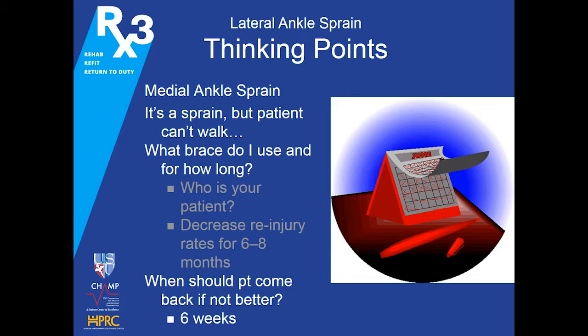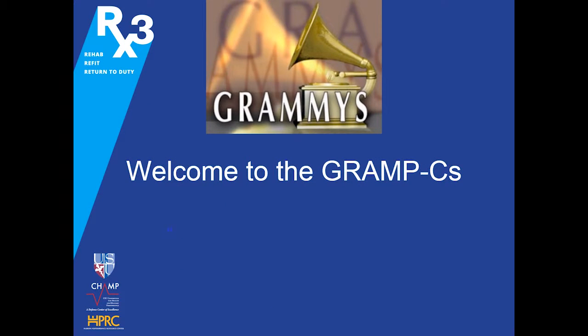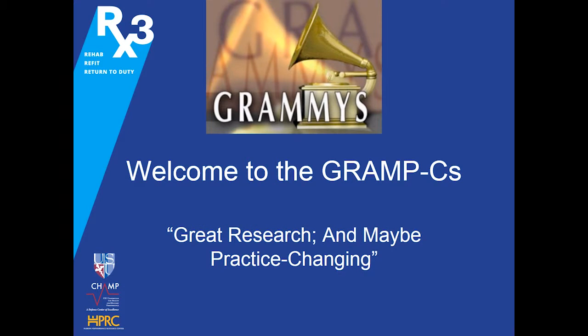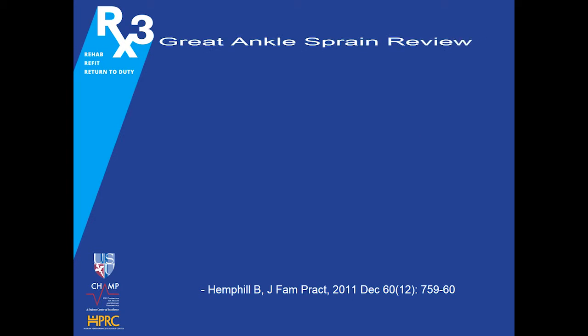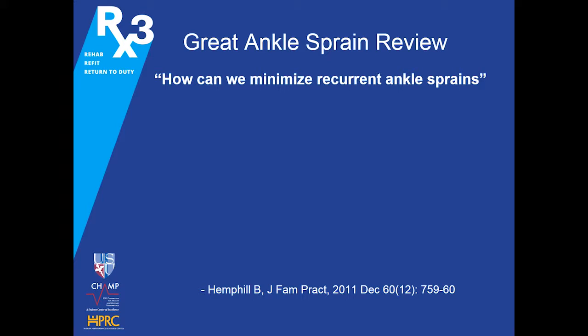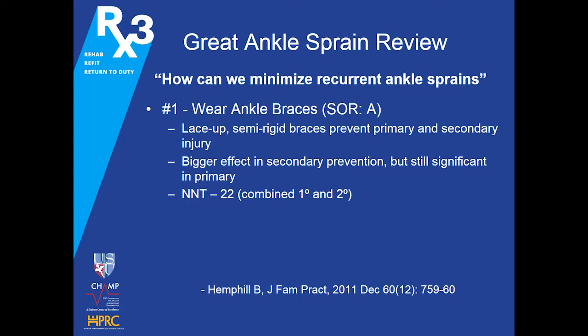When should your patient come back if they're not better? We want them back in six weeks — that's a key time. Now for the research: a great ankle sprain review — 'How can we minimize recurrent ankle sprains?' from the Journal of Family Practice. The first thing family medicine doctors can do is get patients to wear ankle braces. Strength of evidence A — these lace-up semi-rigid braces prevent primary and secondary injury, with a bigger effect for secondary prevention. Number needed to treat combined is 22; for secondary prevention alone it drops to about seven or eight.